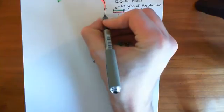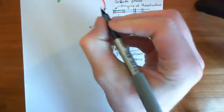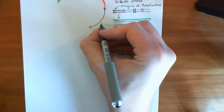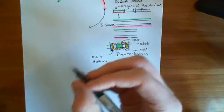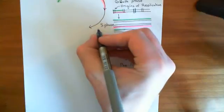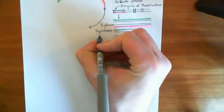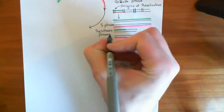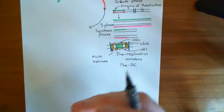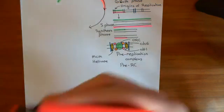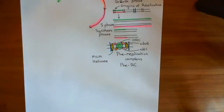Then what happens next is you've got ready to divide — now what has to happen is you actually have to replicate the DNA. This is the S phase of the cell cycle, where the replication of the DNA actually begins. S stands for synthesis — this is the phase of the cell cycle in which you copy the entire genome, basically. So we'll colour the S phase in pink and continue this discussion in the next video.